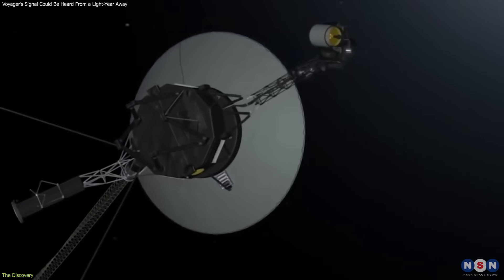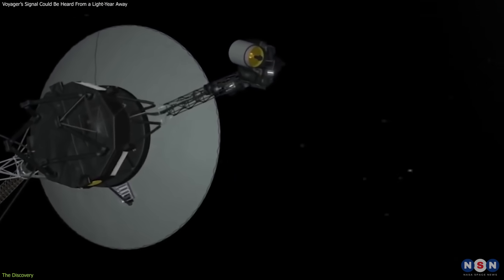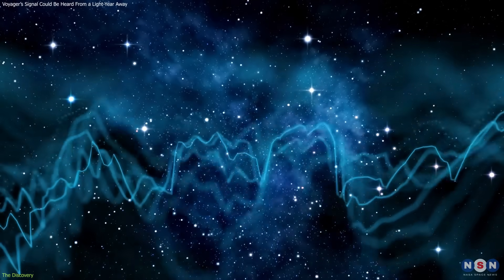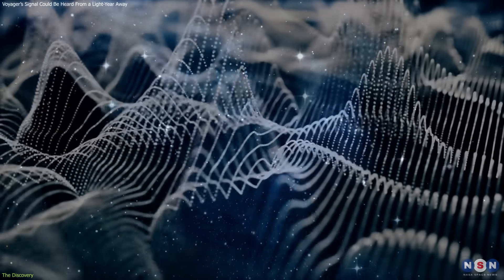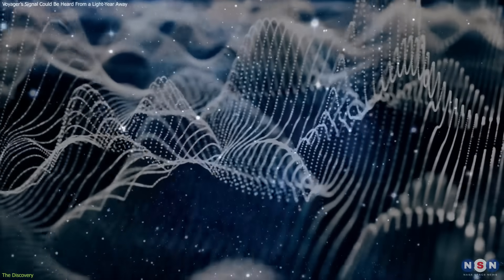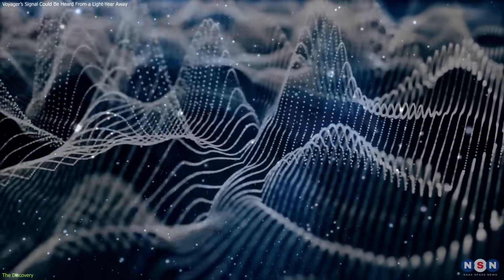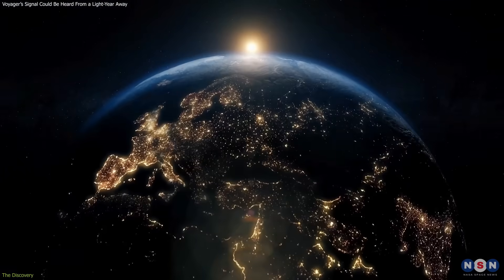The Voyager spacecraft, unintentionally, have become benchmarks for understanding how faint, persistent signals propagate across interstellar space. Their longevity and simplicity provide a valuable analog for evaluating other potential artificial sources, whether from Earth or elsewhere.